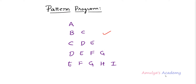To print this pattern, first we need to take input from the user. The input for this program is the number of rows. We will ask the user to enter the number of rows. Here we can see this pattern contains 1, 2, 3, 4, 5 rows, and we can print this pattern with any number of rows.